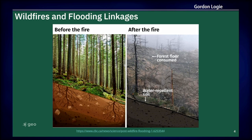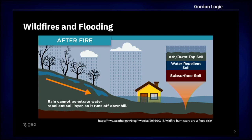In a healthy, unburnt forest, as shown on the left here, the trees and other vegetation, as well as the soil, can intercept rainfall, preventing or slowing it from entering streams. However, when a forest burns, like shown on the right, it can create a water-repellent soil crust. Essentially, the soil ends up acting like pavement, and so rather than penetrating the soil, water actually just runs off into adjacent streams, as shown here.